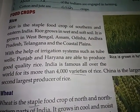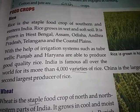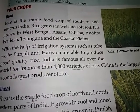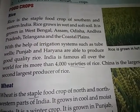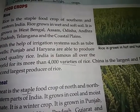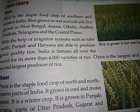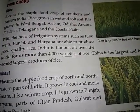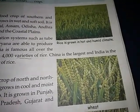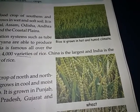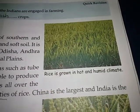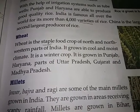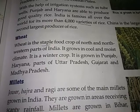Food crops - Rice: rice is the staple food crop of southern and eastern India. Rice grows in wet and soft soil. It is grown in West Bengal, Assam, Odisha, Andhra Pradesh, Telangana and the coastal plains. With the help of irrigation systems such as tube wells, Punjab and Haryana are able to produce good quality rice. India is famous for its more than 4,000 varieties of rice. China is the largest and India is the second largest producer of rice. Rice is grown in hot and humid climate.